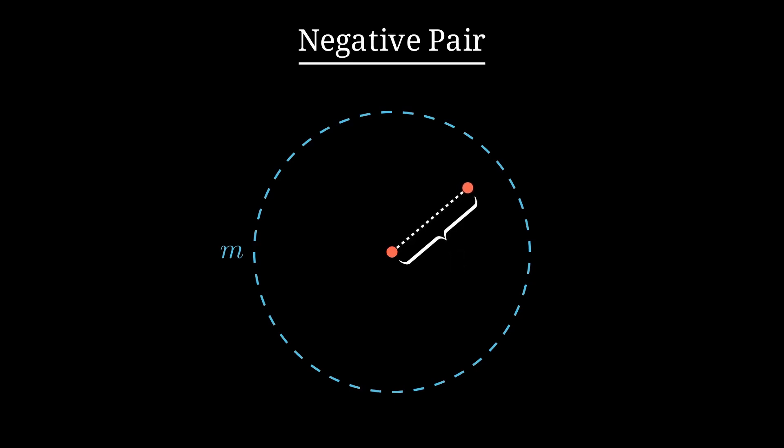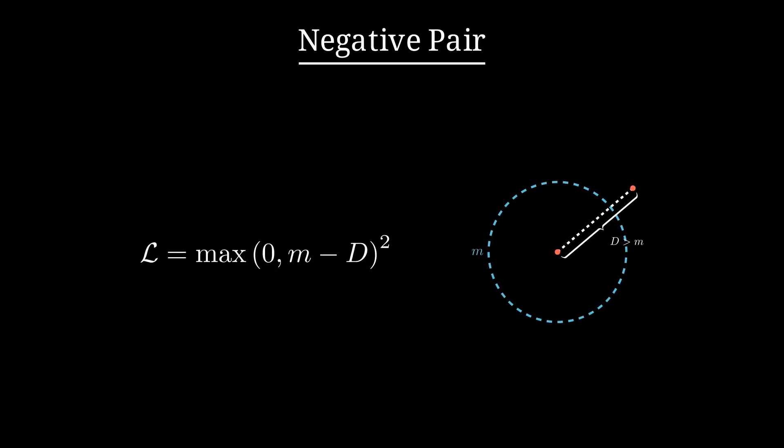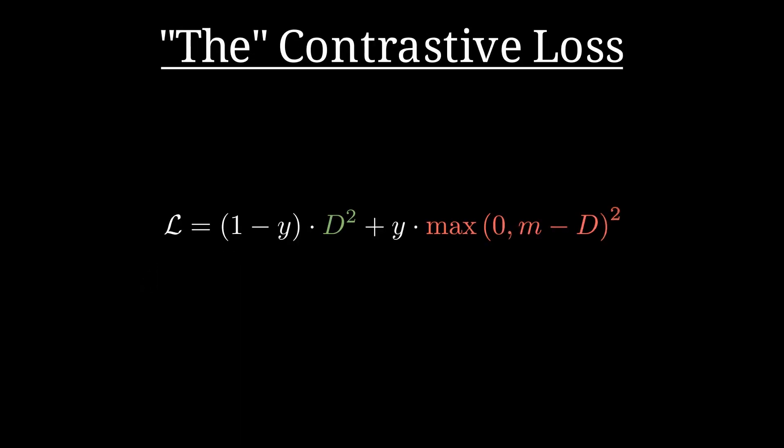However, if the distance is already greater than the margin, the loss is zero, since the points are far enough apart. This means that we can just take the difference between d and m when it is positive and zero otherwise.